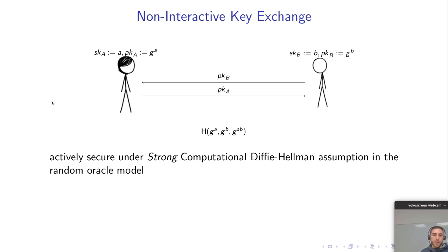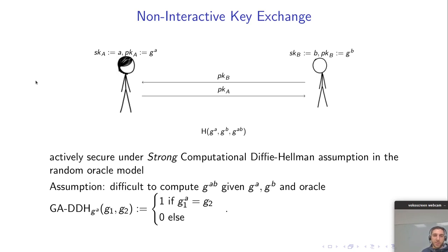Interestingly this is actually actively secure under the strong CDH assumption in the random oracle model. What does the strong CDH assumption state? It states that it's difficult to compute G to the AB given G to the A and G to the B and additional access to an oracle, a decisional oracle which decides whether G to the G1 exponentiated by A equals G2.